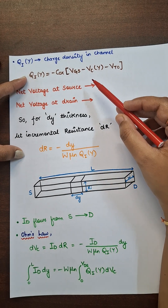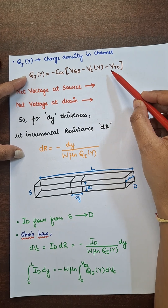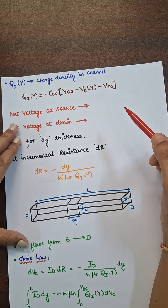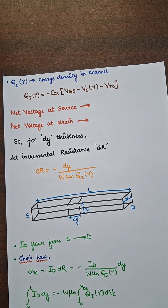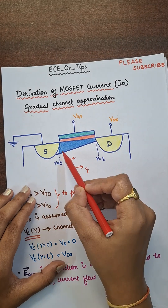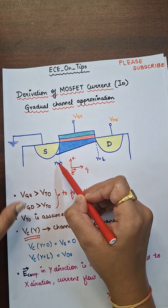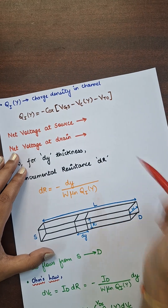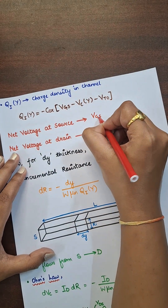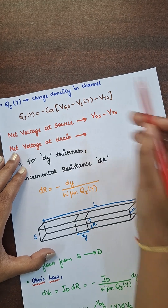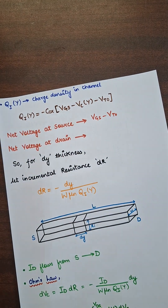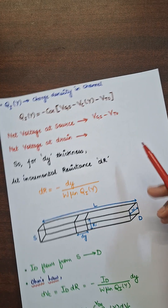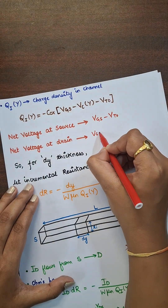The charge density QIY is given by the formula: QIY equals minus Cox times (VGS minus VCY minus VTO). At the source terminal, VCY equals 0, so the net voltage becomes VGS minus VTO. At the drain terminal, VCY equals VDS, so the net voltage becomes VGS minus VDS minus VTO.